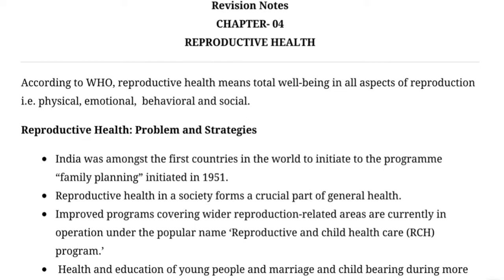According to WHO, reproductive health means total well-being in all aspects of reproduction — that is physically, emotionally, and socially. It means a person fit in all areas. Reproductive health can include all areas of general health.